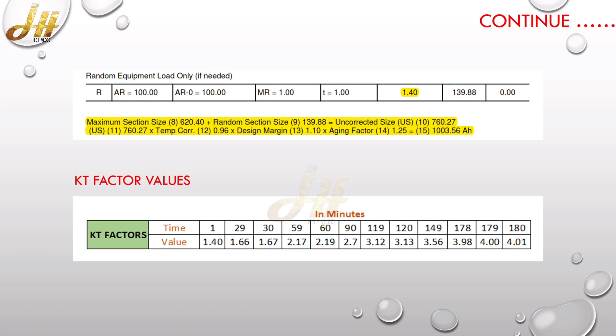Now the capacity has been calculated. Now we will rearrange the KT factor values in an order with time and value. You can see from the above sizing, the value of KT factor for one minute is 1.40, 29th minute is 1.66, 30th minute is 1.67. Similarly, for 60 minute it is 2.19, 120th minute is 3.13, and the third hour, 180 minute, it is 4.01.